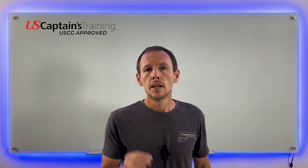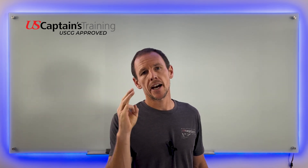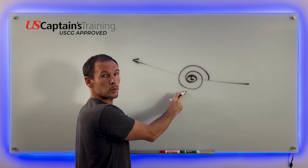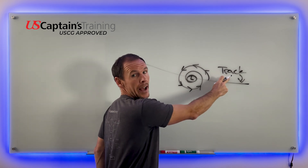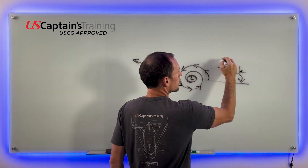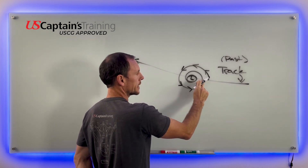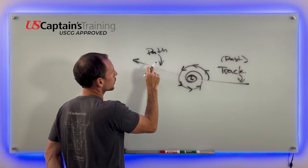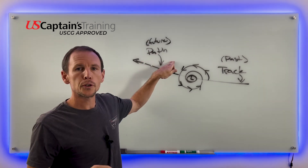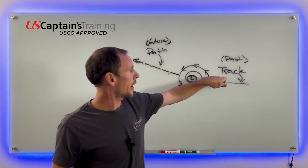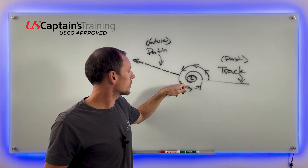Before we start tracking the storm, we need to become familiar with a couple of terms: track, path, dangerous side, and navigable side. Here's the low pressure with wind on each side. The track of the low pressure is the past — where it has been. The path is the future — the predicted future path. So we have the track in the past and the path in the future where we predict it's going to go.